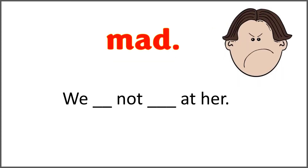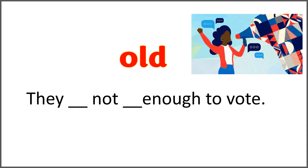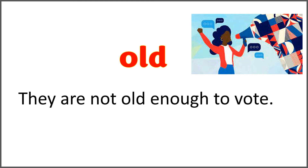The given word is 'mad.' We blank not blank at her. Use the word 'mad' with 'are' to complete this sentence. We are not mad at her. The given word is 'old' and the sentence is 'they blank not blank enough to vote.' Use the word 'old' with 'are' to complete this sentence. They're not old enough to vote, are they?